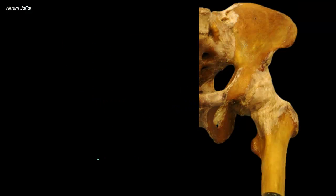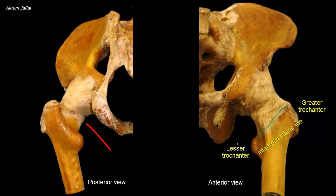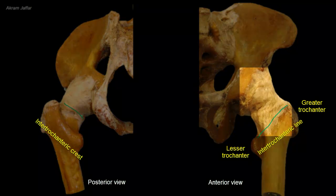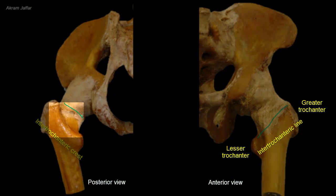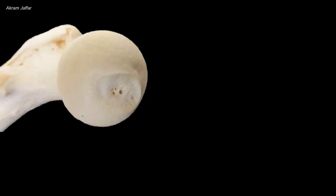Distally, the capsule is attached to the neck of the femur as follows. Anteriorly, it is attached to the intertrochanteric line between the greater and lesser trochanters. Posteriorly, the capsule extends halfway along the neck of the femur and is attached proximal to the intertrochanteric crest. That is to say the entire neck of the femur is intracapsular anteriorly, while posteriorly there is part of the neck that is extracapsular. The head of the femur has a non-articular part excavated by a pit or fovea for the attachment of the ligament of the head of the femur, also called the ligamentum teres.